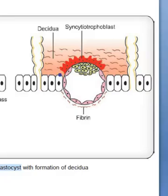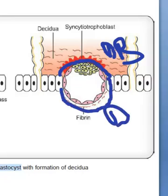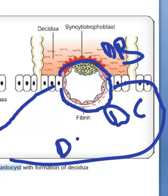Now, wherever the blastocyst implants, that portion of the endometrium gets the name Decidua basalis. Whatever forms around the embryo will be called Decidua capsularis. And the remaining part of the uterine wall will be called Decidua parietalis.